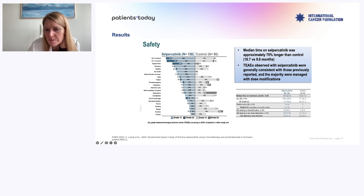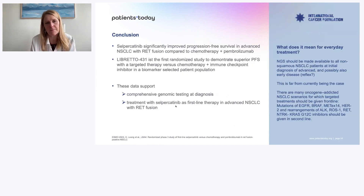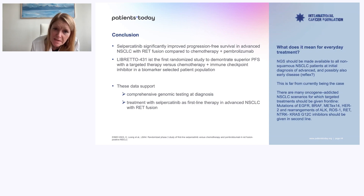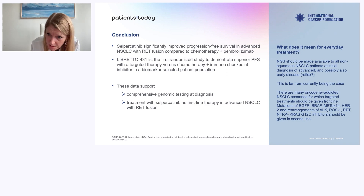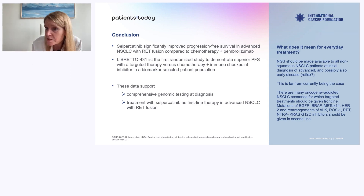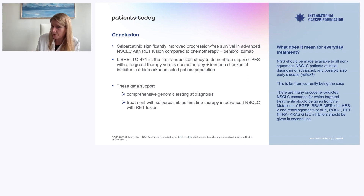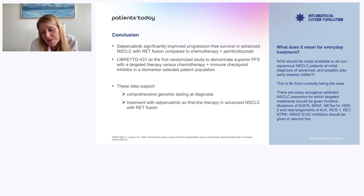Selpercatinib significantly improved progression-free survival. This is the first randomized study to demonstrate that in RET fusion, targeted therapy is better than chemo. It's possible we will never show a benefit in overall survival — if you allow crossover, the difference in survival becomes very small. That's fine; in lung cancer, the best treatment first is the rule because some patients never get to second-line treatment.